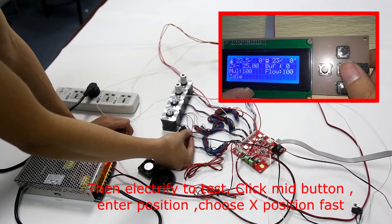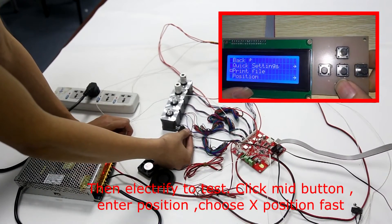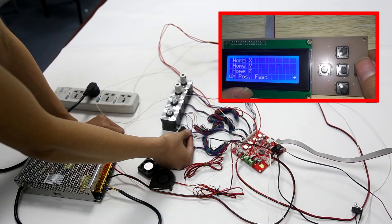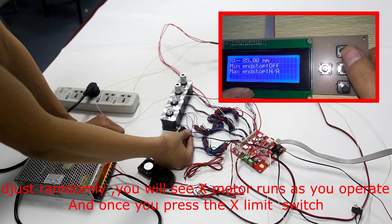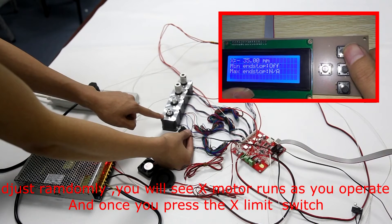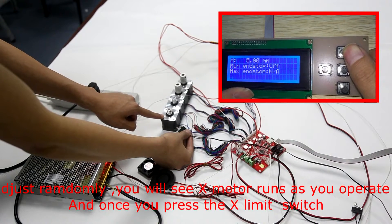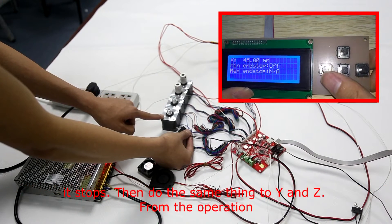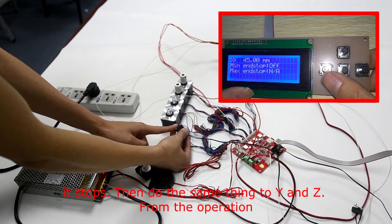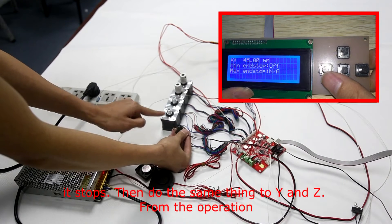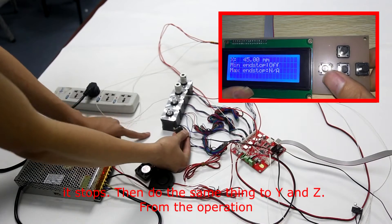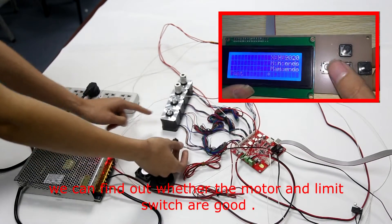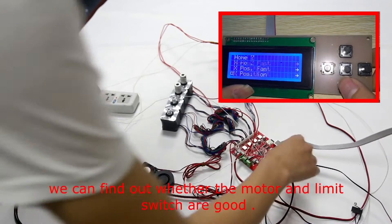Then, electrify to test. Click the middle button, enter position. Choose X position fast, adjust randomly. You will see the X motor runs as you operate. And once you press the X limit switch, it stops. Then, do the same thing to Y and Z. From the operation, we can find out whether the motor and limit switch are good.